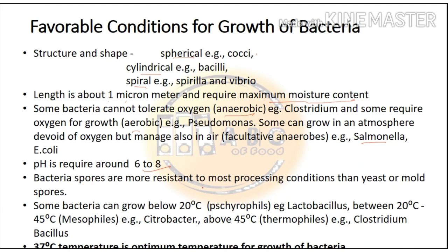Bacterial spores are more resistant to most processing conditions than yeast or mold spores. Some bacteria can grow below 20 degrees Centigrade — known as psychrophiles — for example, Lactobacillus. Some can grow between 20 to 45 degrees Centigrade — known as mesophiles — for example, Citrobacter. Some can grow above 45 degrees Centigrade — known as thermophiles — for example, Clostridium and Bacillus. The most suitable temperature for bacterial growth is 37 degrees Centigrade, which is the optimum temperature.